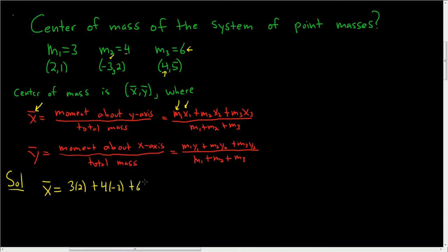Right? These guys are our x's. This is x1, this is x2, and this is x3. And then we divide by the total mass of the system, so we just add up the masses.